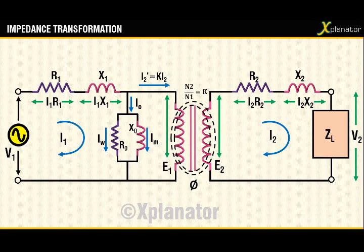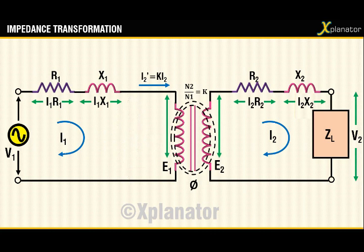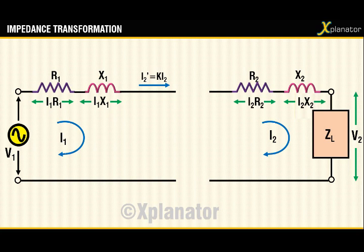Now consider the equivalent circuit of a transformer — there is a previous video on how to draw this circuit step by step, you can find the link in the description. The load current i0 in this circuit is very negligible in comparison to the load current i2 and also the current in the primary circuit i1. So we can safely eliminate i0 and the elements carrying this current. Since we are talking about impedance transfer there will be only one circuit, hence the coils are also eliminated. Now you have two resistances and two reactances.